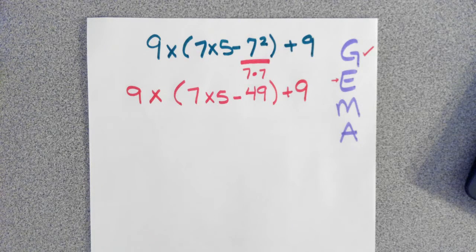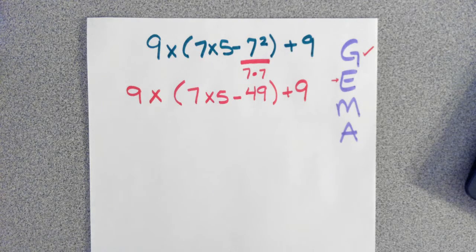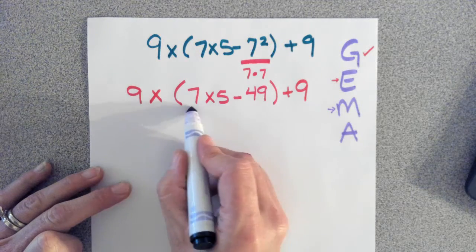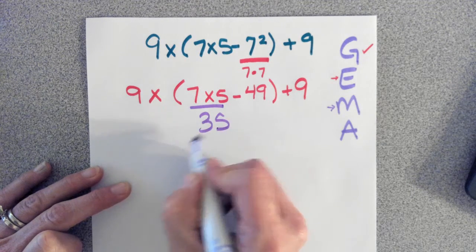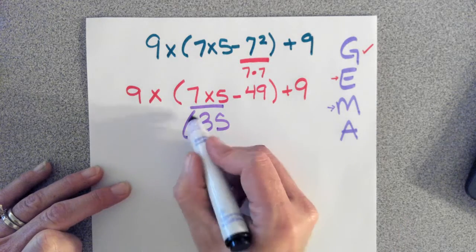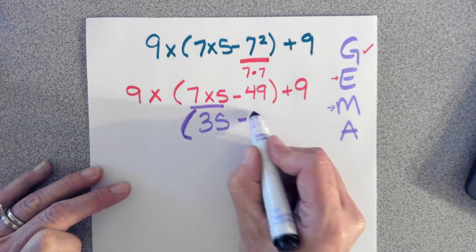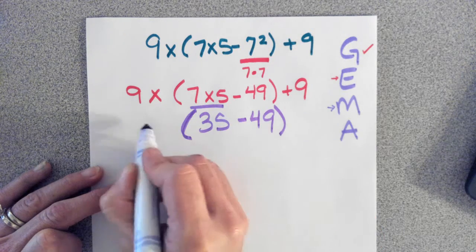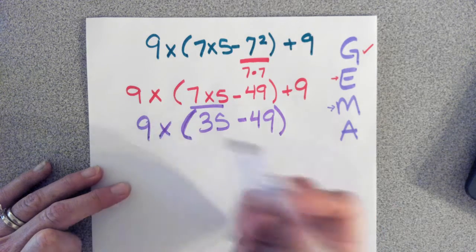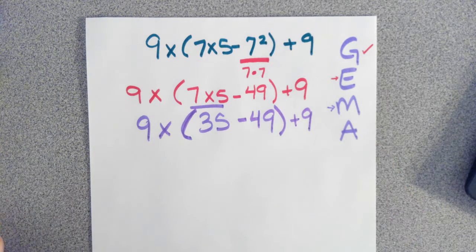Our next step inside the parentheses will be multiplicative. So let's do 7 times 5. Since 7 times 5 is 35, we're going to replace that with 35. And we've got a minus 49. Still in the grouping. I'm going to go ahead and write my 9 times in the front and my plus 9 in the back.